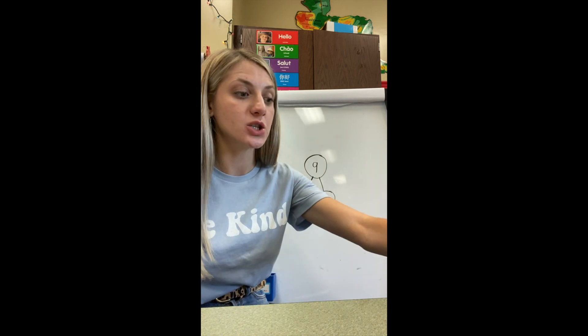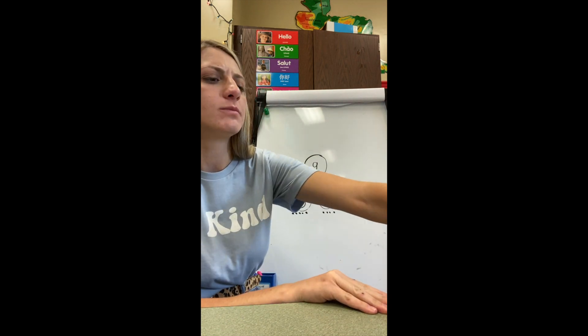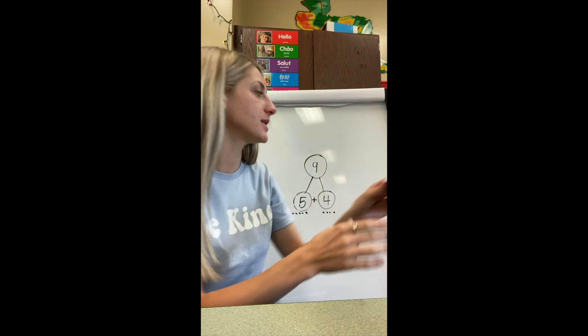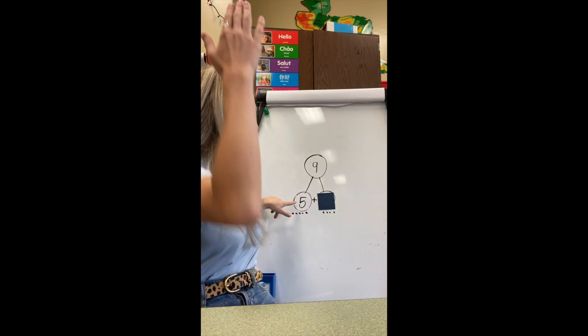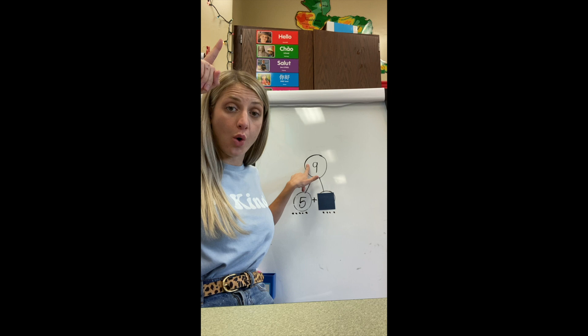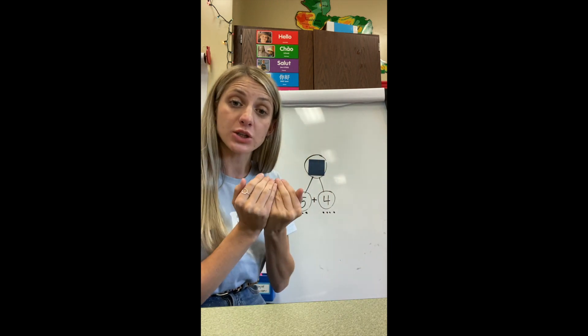So just to wrap it up — if we are missing a part, we count part up to whole. If we're missing the whole, we add the parts together. Two thumbs up — point them at yourself. Say: I am a mathematician. Good job. And I will see you next time. Bye-bye.